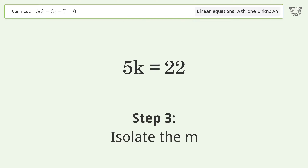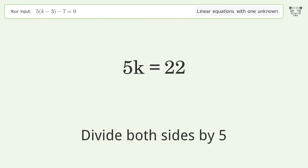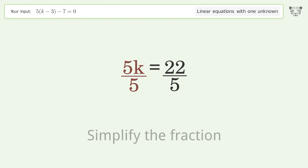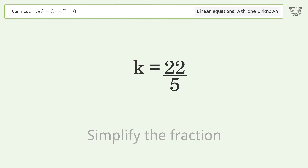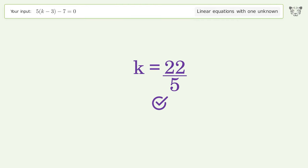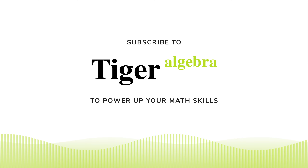Isolate the k. Divide both sides by 5. Simplify the fraction. And so the final result is k equals 22 over 5.